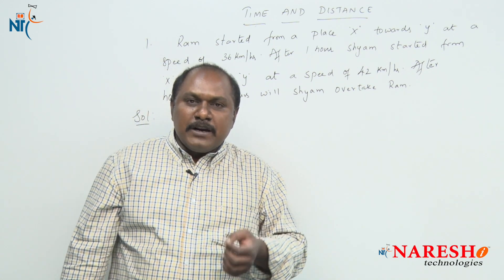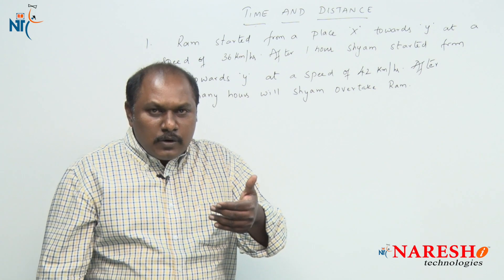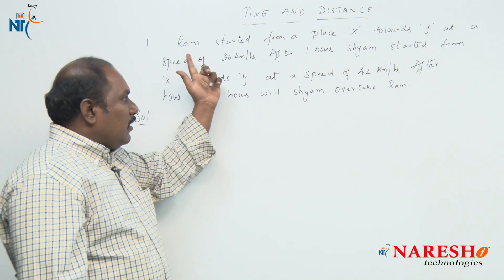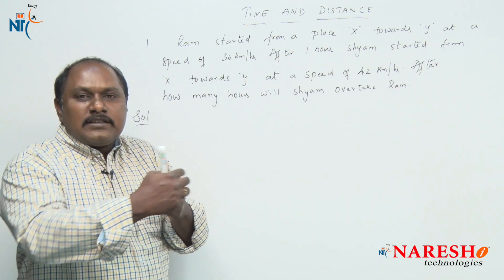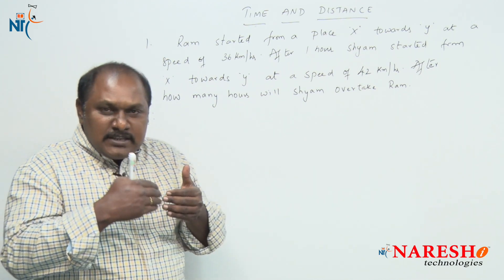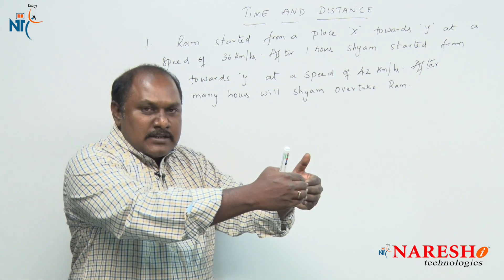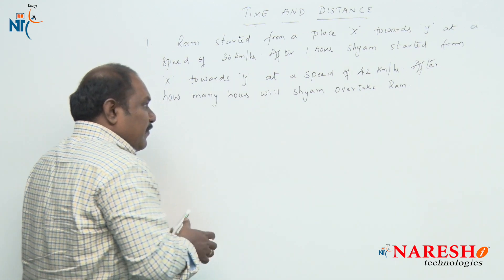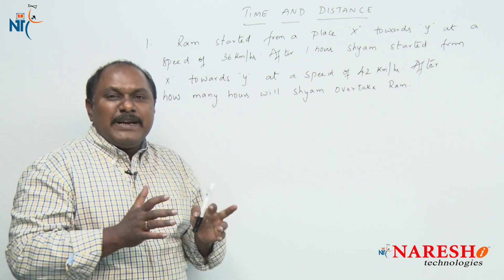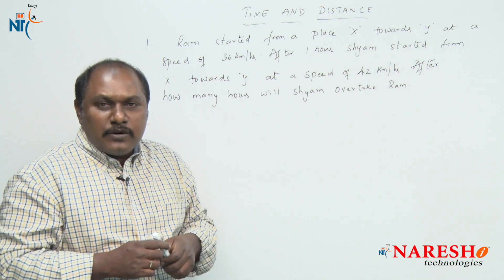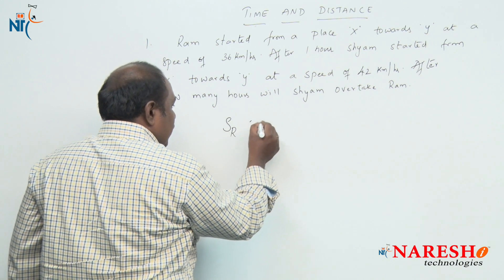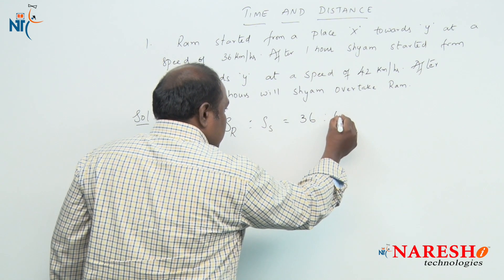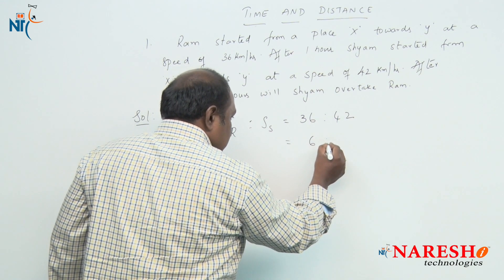This is one way to answer this question. The second method uses the concept of ratios. What is constant between Ram and Shyam until Shyam overtakes Ram? Both start from the same place and travel the same distance by the time Shyam overtakes Ram, so distance is constant. When distance is constant, speed and time are inversely proportional. The ratio of Ram's speed to Shyam's speed is 36 to 42, which is 6 to 7.